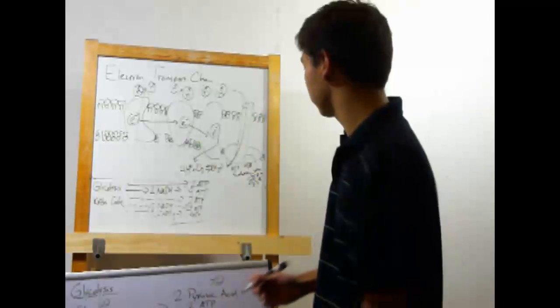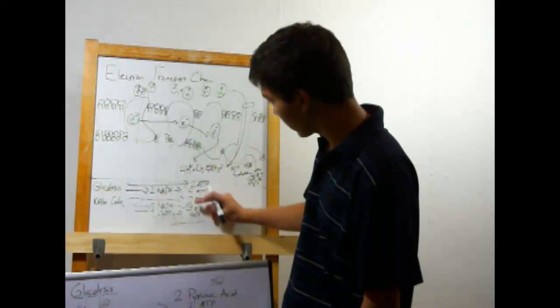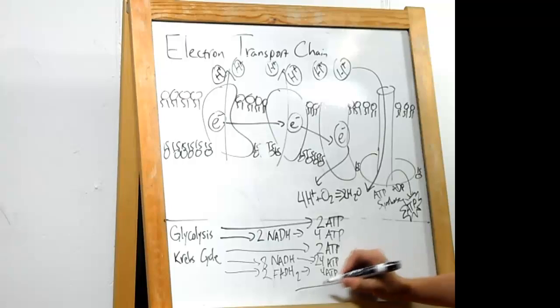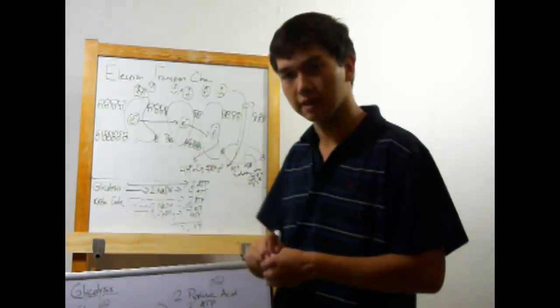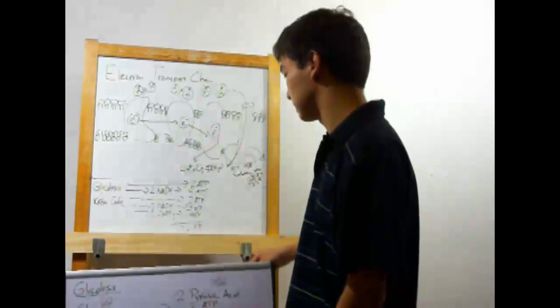Now we can look up the totals. Adding this all up, we'll get 36 ATP. And that's the total ATP yield from cellular respiration.